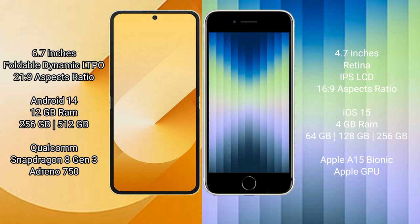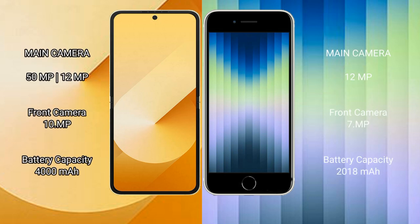Samsung Galaxy Z Flip 6 comes with 12GB RAM and 256GB or 512GB internal storage, Qualcomm Snapdragon 8 Gen 3 processor, and Adreno 750 GPU. iPhone AC comes with 4GB RAM and 64GB, 128GB, or 256GB internal storage, Apple A15 Bionic processor and Apple GPU.